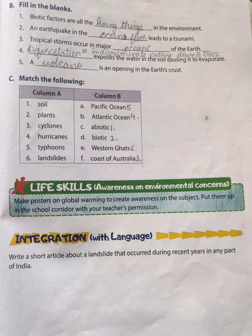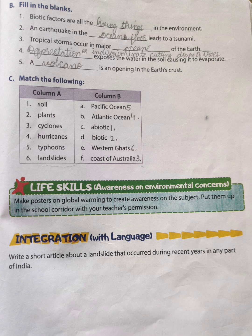Fill in the blanks. Number 1: Biotic factors are all the living things in the environment. Number 2: An earthquake in the ocean floor leads to a tsunami. Number 3: Tropical storms occur in major oceans of the earth. Number 4: Deforestation or indiscriminate cutting down of trees exposes the water in the soil causing it to evaporate. Number 5: A volcano is an opening in the earth's crust.